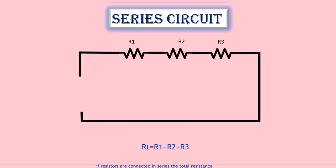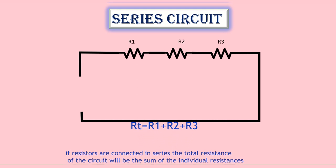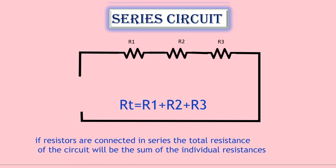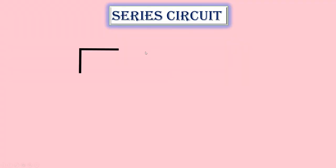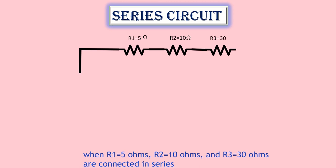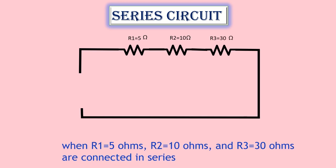If resistors are connected in series the total resistance of the circuit will be the sum of the individual resistances. When R1 equals 5 ohms, R2 equals 10 ohms, and R3 equals 30 ohms are connected in series,